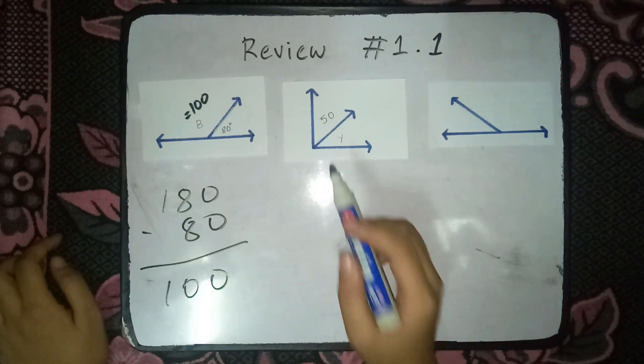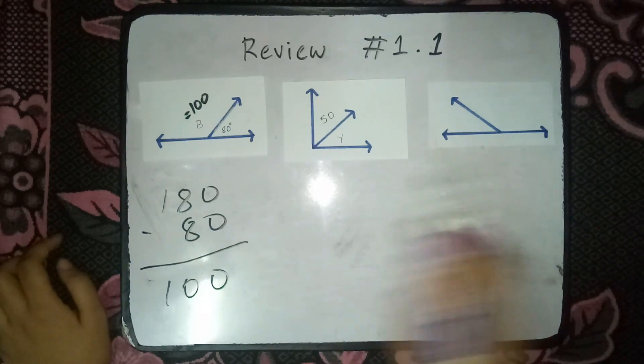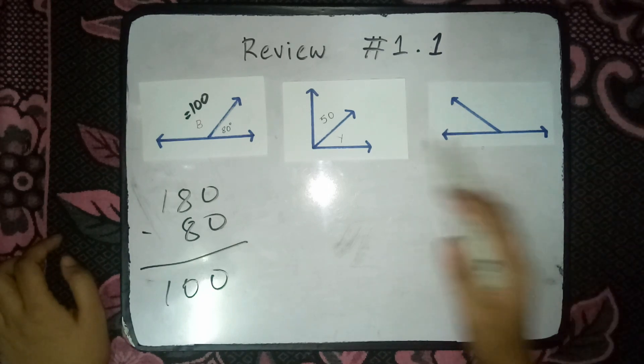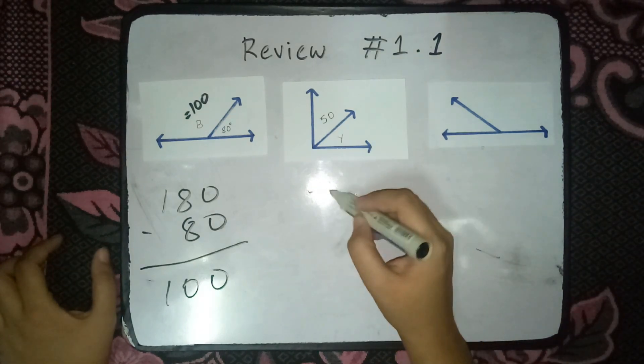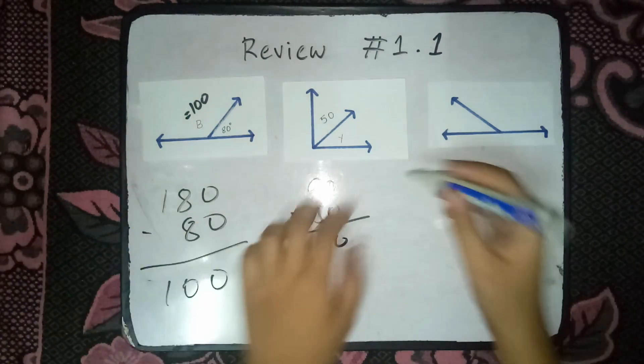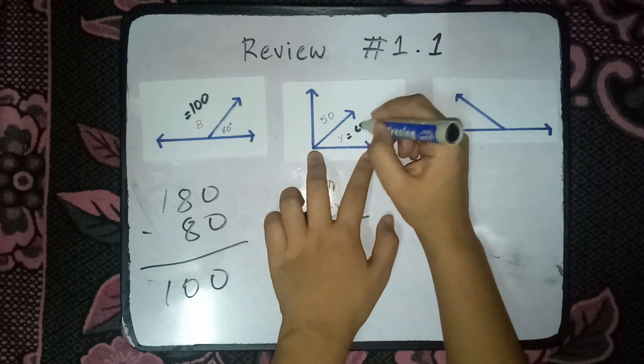Next, this is right angle or complementary angle. Ang complementary angle, kapag pinag-add yung dalawang angle, ang sagot is 90 degree. So, we have 90 minus 50 is equals to 40. So, y is equals to 40 degree.